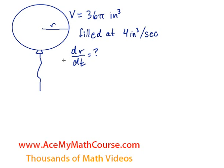At that very moment when the volume is 36π cubic inches, our question is what is dr/dt, essentially which is the rate in which the radius is increasing with respect to time. We know that the volume of a sphere is 4/3 πr³.